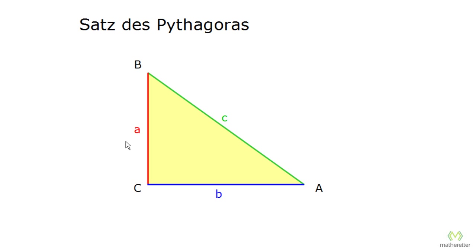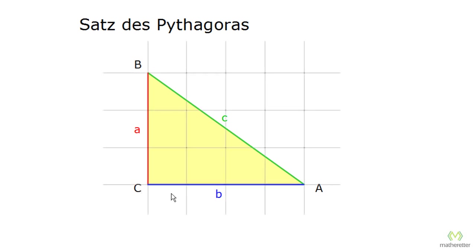Let's first imagine we have a right triangle and want to determine sides A, B, and C. We know that we can put a grid over this triangle and then read the length of sides A and B. Side A is three boxes long, so three centimeters, and side B is four boxes long, so four centimeters. If we want to know side C, that is not so easy, because it lies diagonally and is not lined up with the boxes like the other sides. Therefore, we have to come up with something new to determine side C.